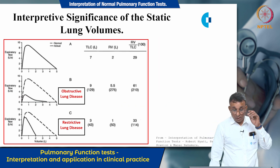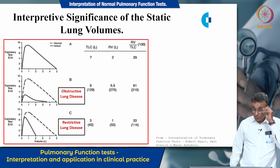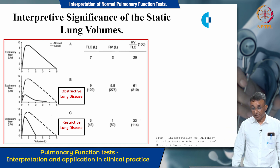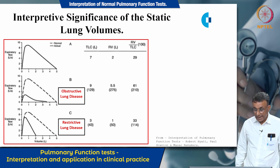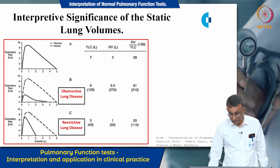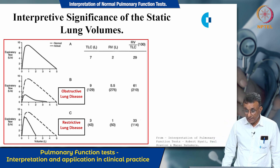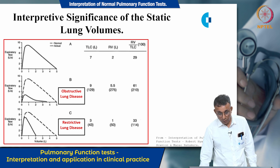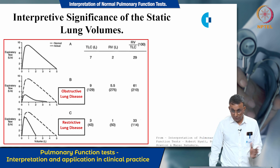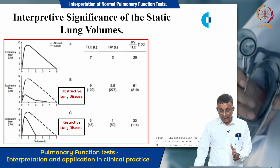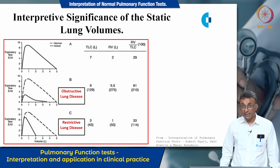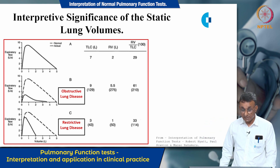This diagram shows a normal flow volume loop alongside flow volume loops seen in obstructive lung disease and restrictive lung disease. You can see that the static lung volumes shown on the side are noted to be altered in both obstructive and restrictive lung disease.